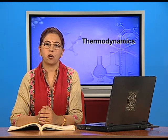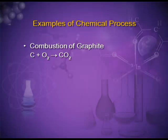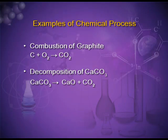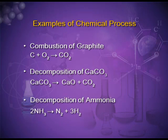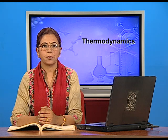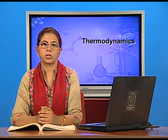In a chemical process, the chemical formula is changed. For example, combustion of graphite: carbon plus oxygen gives carbon dioxide. Another example is decomposition of calcium carbonate or decomposition of ammonia. In all these examples, the reactants and the products have different chemical formulas. So all those processes in which a new substance is formed are chemical processes.